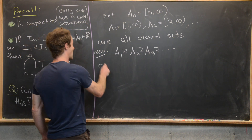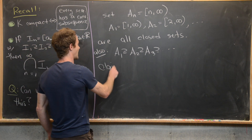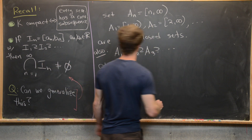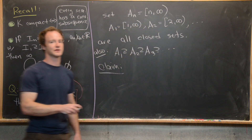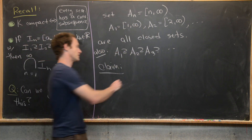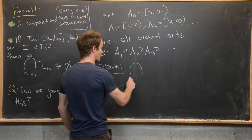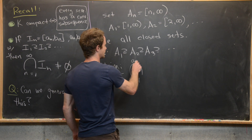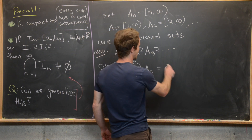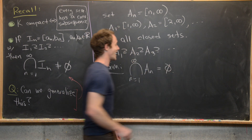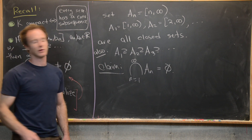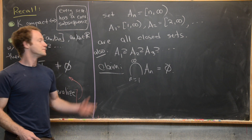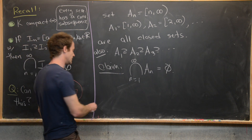But now I'm going to claim that they do not satisfy the conclusion of the nested interval theorem. In other words, the intersection as n goes from 1 to infinity of A_n in fact equals the empty set. So let's see how to show that.